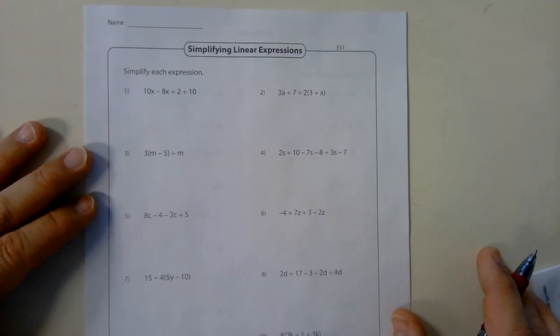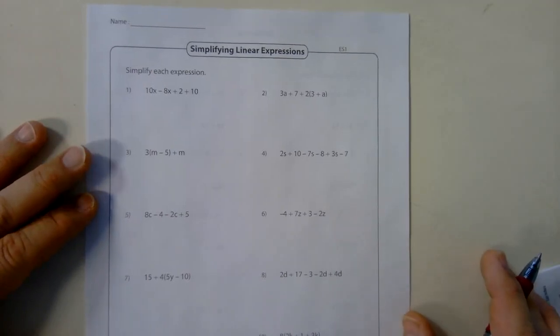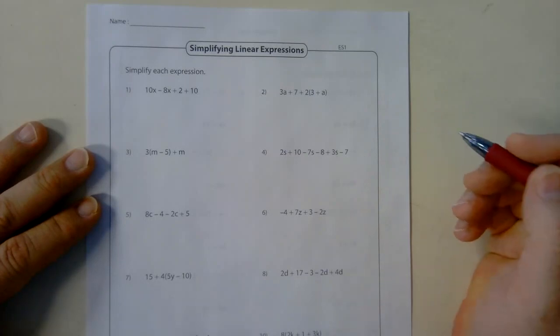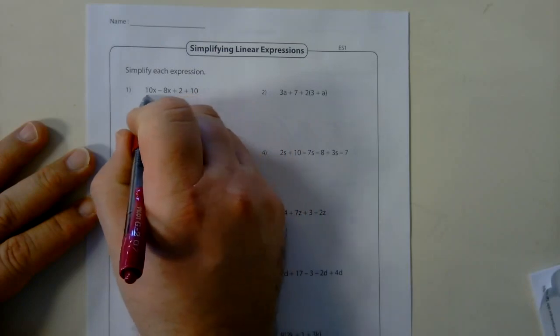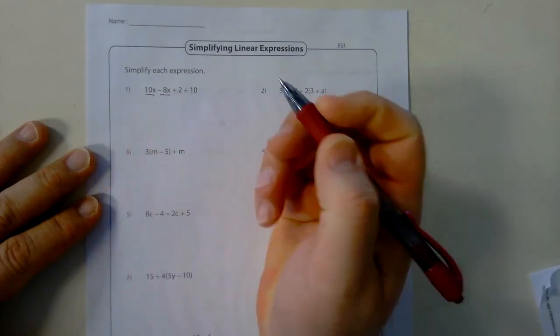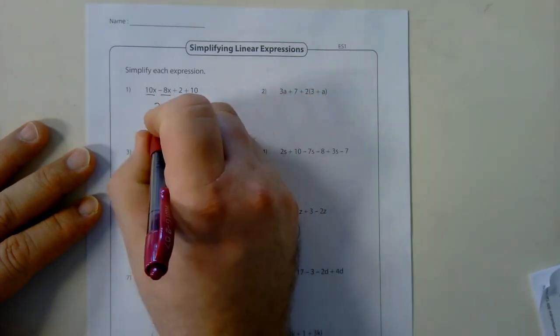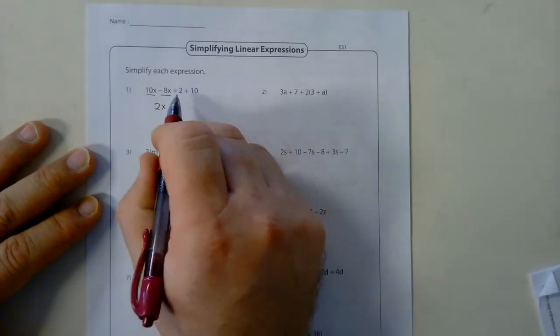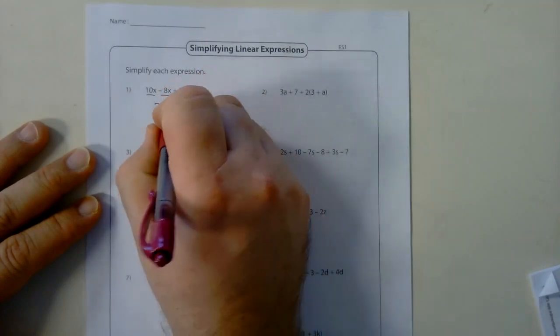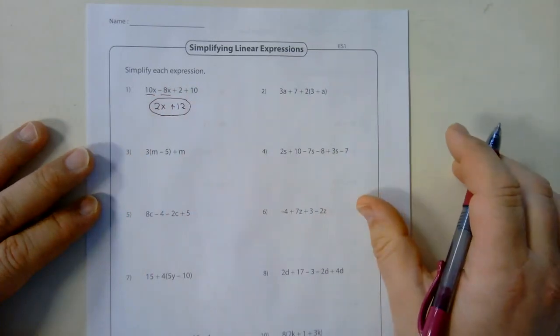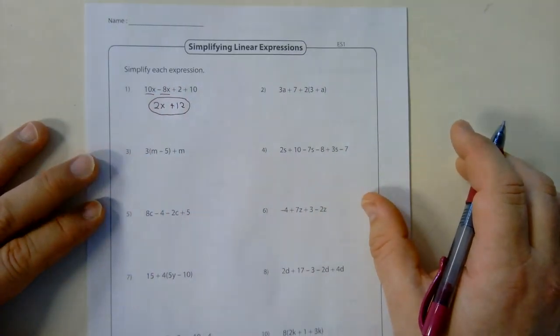I'm going to be doing the odd ones, and then I'll let you do the even ones and see if you guys get the correct answers for those at a later time. So starting with number one, you notice that we have 10x minus 8x plus 2 plus 10. I'm going to focus on the like terms of the variables. The 10x minus the 8x. 10 minus 8 is 2. Make sure you include your variable so you get 2x. And then positive 2 plus 10 is positive 12. And there's my final answer. Notice it's two terms, and we call that a binomial.